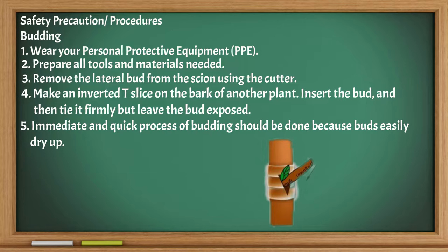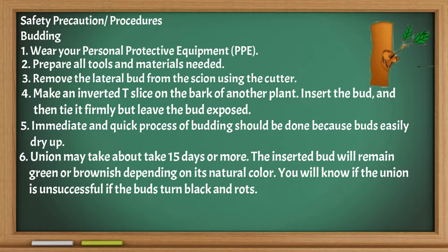The budding process should be done immediately and quickly because buds easily dry up. Union may take about 15 days or more. The inserted bud will remain green or brownish depending on its natural color. You will know the union is unsuccessful if the buds turn black and rot.